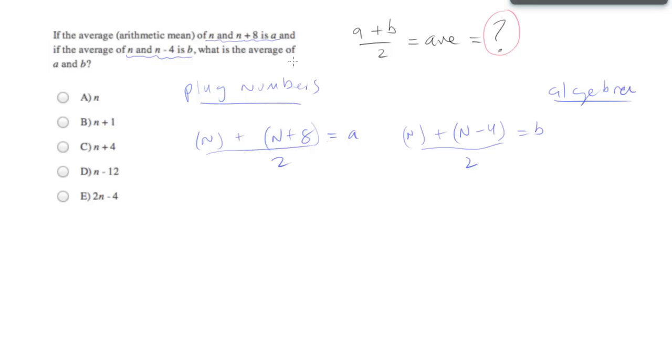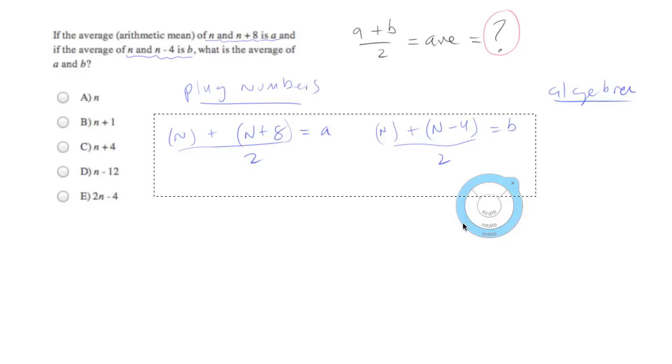And finally, they ask, what is the average of a and b? And here's the moment where you might be tempted to attempt an algebraic solution. Right? We have a formula for a, a formula for b, and they're all in terms of n. So you might be tempted here to plug in to a plus b over 2. And what that's going to be is all of this thing plus all of that thing divided by 2.